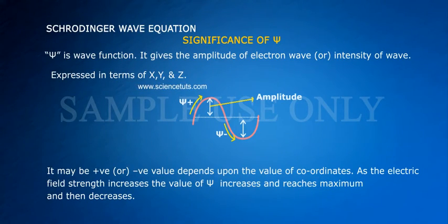Significance of psi: psi is a wave function. It gives the amplitude of electron wave or intensity of wave expressed in terms of x, y, z. It may be positive or negative value depending upon the value of coordinates. As the electric field strength increases, the value of psi increases and reaches maximum and then decreases.